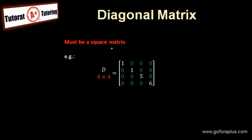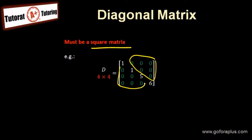So what is a diagonal matrix? Again, it must be a square matrix. In this example, a 4 by 4 diagonal matrix — except the main diagonal, everything has to be 0. As we can see with the green numbers, all 0. So this is what we call a diagonal matrix.